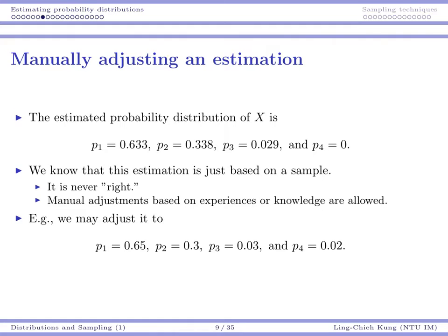Because of that, manual adjustments based on experiences and domain knowledge are always allowed and actually welcome. For example, even though in the past two years there is no event for thunderstorm or heavy snow, you probably still believe this extreme weather may happen in the future, so you want to assign a positive probability to this event. You might adjust the probabilities to 65%, 30%, 3%, and 2%.